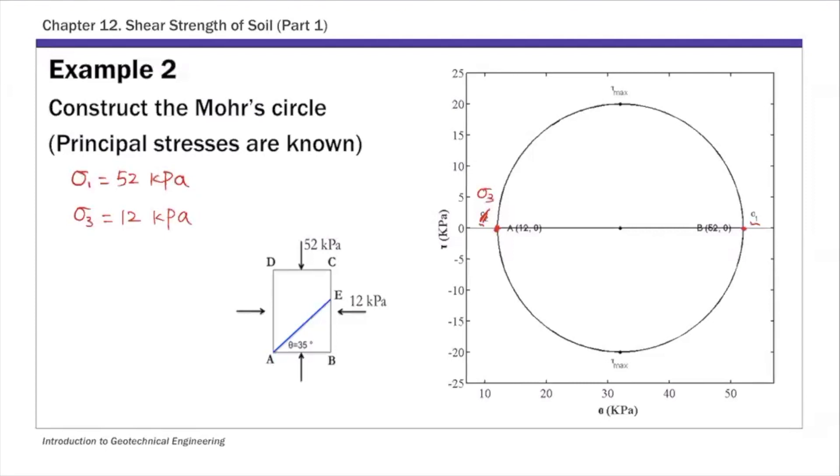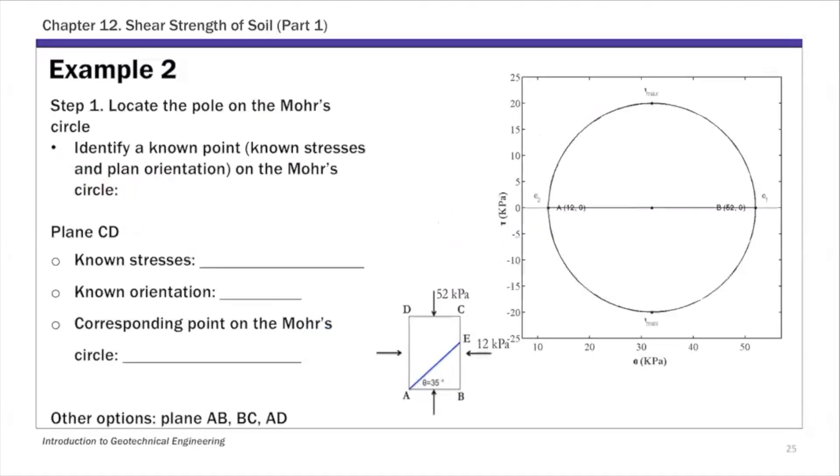Once you have the Mohr circle, the Pole method has two steps. The first step is to locate the pole on the Mohr circle, which involves identifying a known point. For this example, we have multiple options; I'm going to pick plane CD. We know the stresses on plane CD.